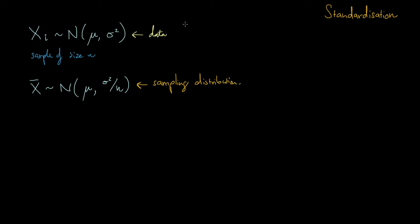What we're going to cover today is the idea of standardization. Standardization is basically a transformation of a random variable so that it takes a particularly nice and standard form. We're going to transform both of these random variables so that they have a standard normal distribution — that is, a distribution that's normal with a mean of 0 and a variance of 1.